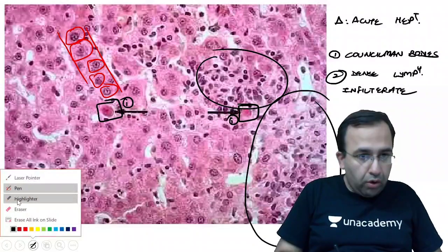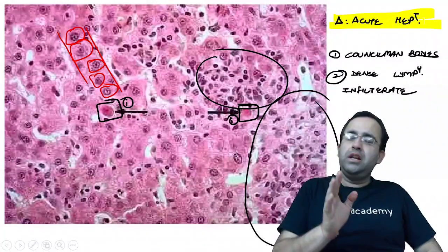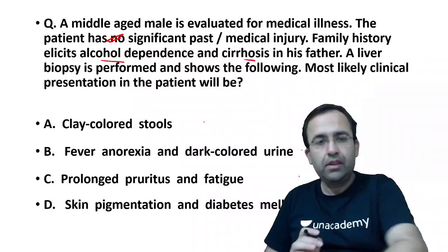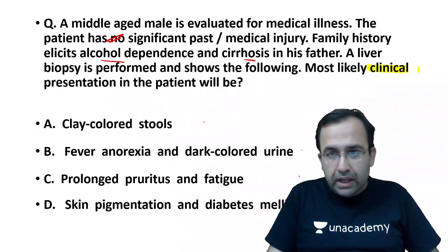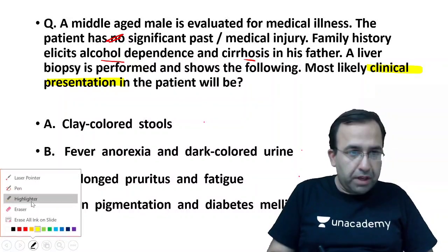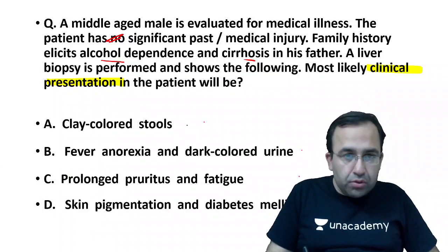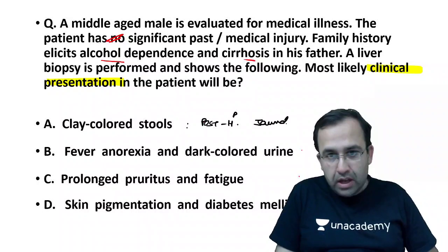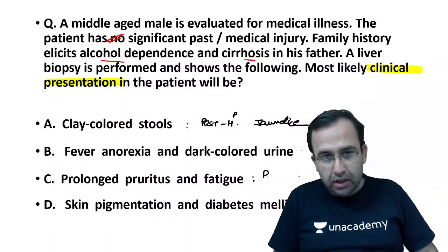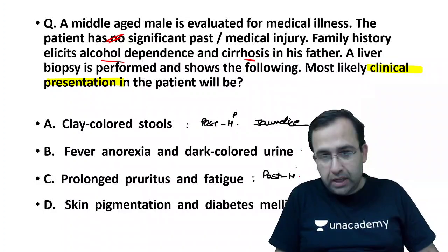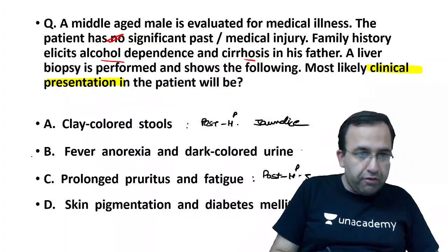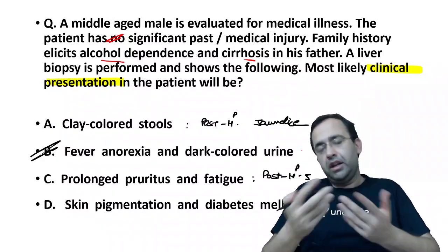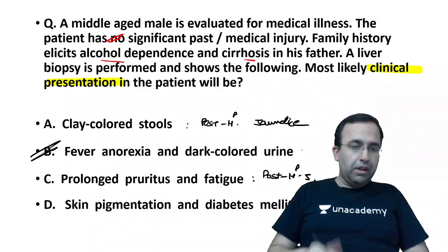So all the examiner has told you is that a middle-aged male has come to the OPD with features of acute hepatitis. Most likely clinical presentation of the patient will be: clay-colored stools are associated with post-hepatic jaundice, and so is prolonged pruritus and fatigue. The minute we talk of pruritus, we are talking of post-hepatic jaundice. Versus acute hepatitis, which will present with fever, anorexia, and dark-colored urine, because of hyperbilirubinemia. Making the answer B.